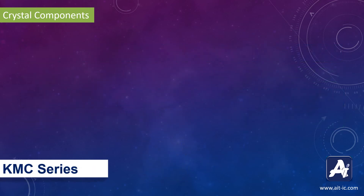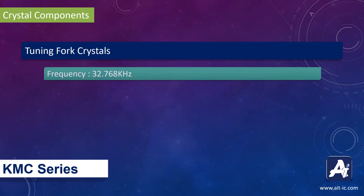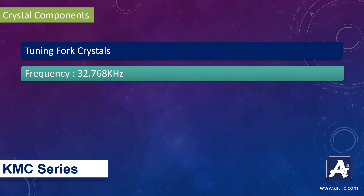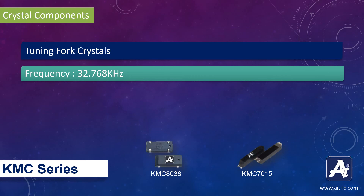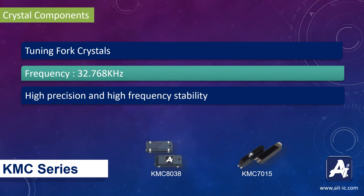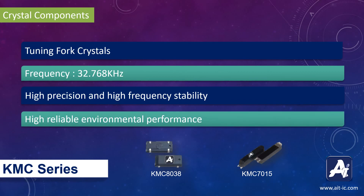The KMC series crystals are tuning fork crystals with a frequency of 32.768 kHz. They are available in two different packages: KMC 8038 and KMC 7015. These crystals are highly precise with high frequency stability and reliable environmental performance.